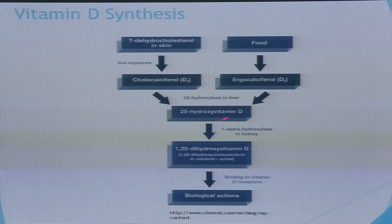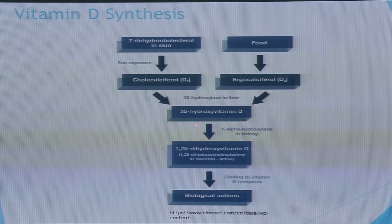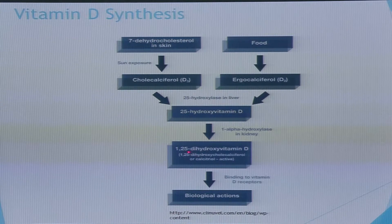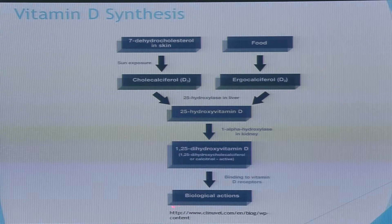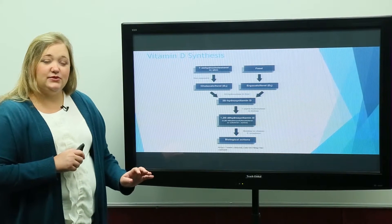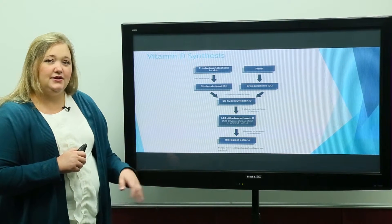Both D2 and D3 are activated in the liver to 25-hydroxy vitamin D, which is still the inactive product. It then goes to the kidney and is activated to the active vitamin D product, 1,25-dihydroxy vitamin D. That active form then carries out its biological actions, which include increasing calcium absorption from the GI system.